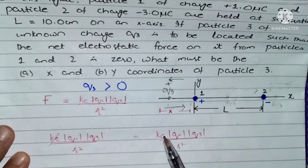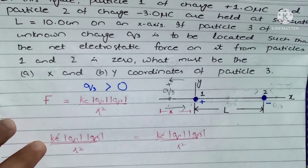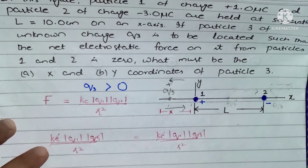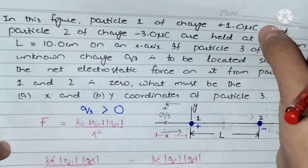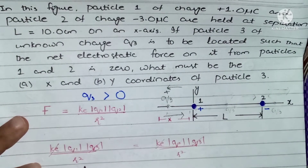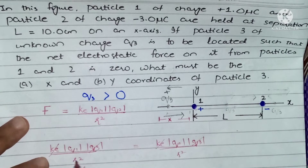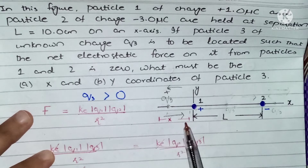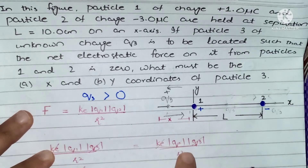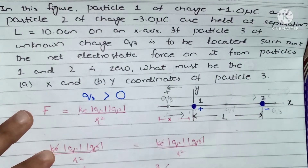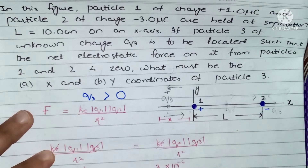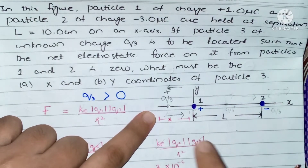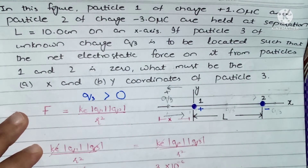The constants ke cancel and q3 cancels as well. We are left with q1 over r² equals q2 over r². Substituting values: the magnitude of charge 1 is 1×10⁻⁶, divided by x² — where x is the distance between q1 and q3. This equals the magnitude of charge 2, which is 3×10⁻⁶, divided by (x + L)² — the distance between q2 and q3 is x plus L.